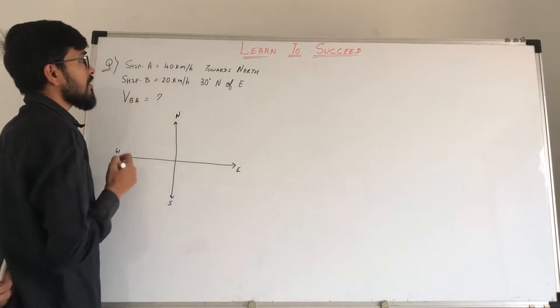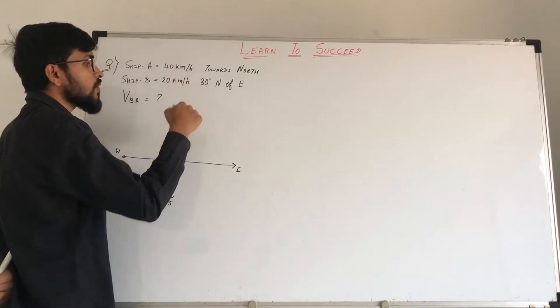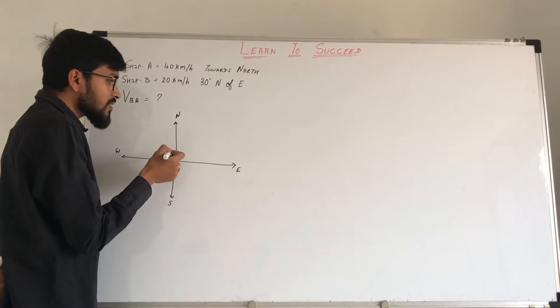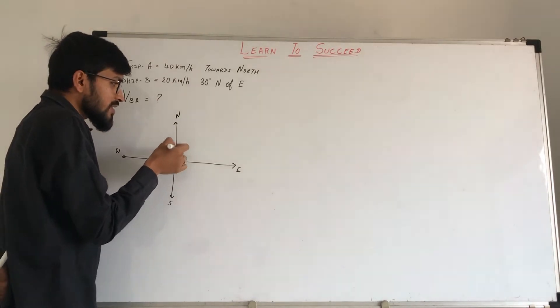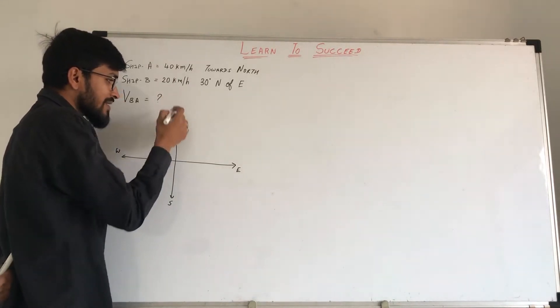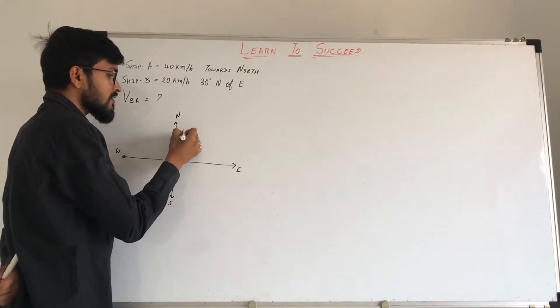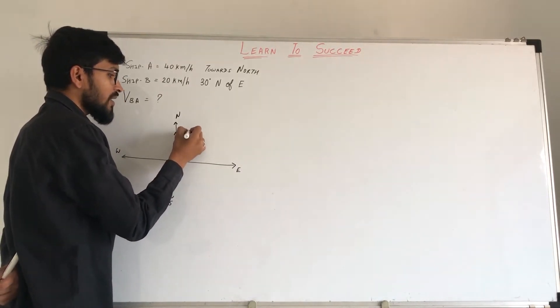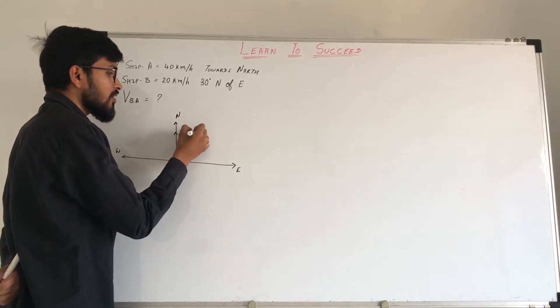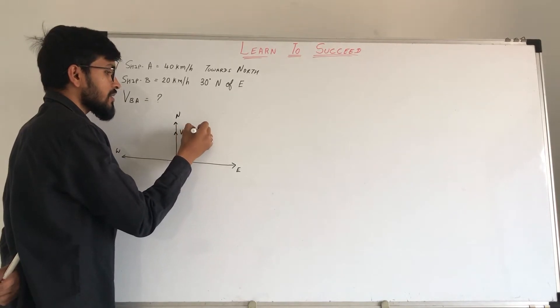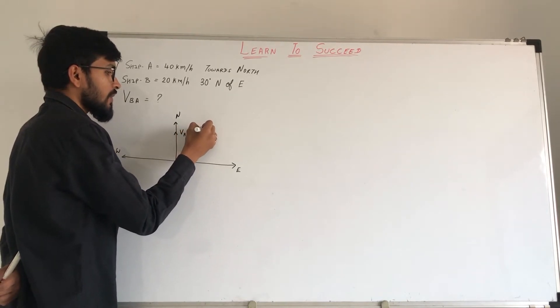So for ship A, it means it is 40 km per hour towards north. Towards north means its velocity is along the north axis. So the velocity of ship A is 40 km per hour.